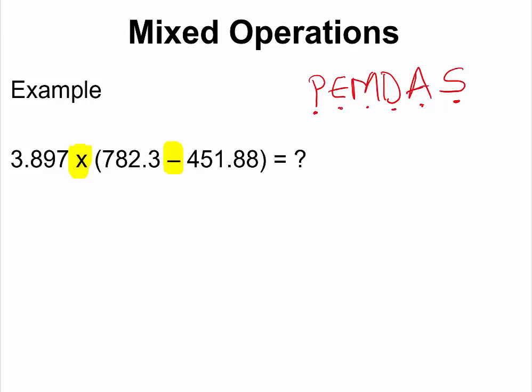When we want to solve this problem we need to first solve what is inside the parentheses. So we enter 782.3 minus 451.88 into our calculators, and if you do that you should get 330.42. Remember we are not going to round yet, but we will indicate where our last significant digit is.